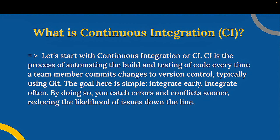So first, what is continuous integration, or CI? CI is the process of automating the build and testing of code every time a team member commits changes to version control, typically using Git. The goal here is simple: integrate early, integrate often. By doing so, you catch errors and conflicts sooner, reducing the likelihood of issues down the line.